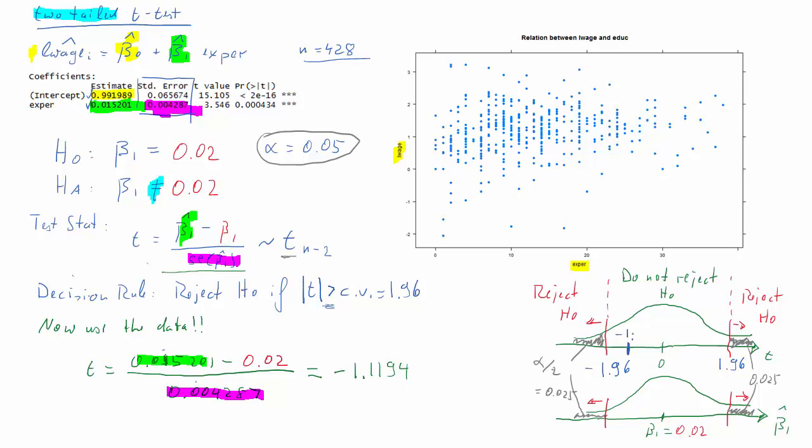So let's see where that lies in the graph. It's somewhere here, negative 1.12. It is clearly in the do not reject region. So therefore our conclusion is: do not reject the null hypothesis. Our null hypothesis was that beta 1 has a value of 0.02.